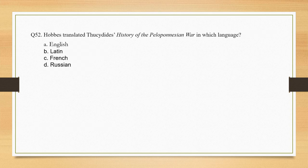Hobbes translated Thucydides' History of the Peloponnesian War into which language? Options: English, Latin, French, Russian. The answer is English.